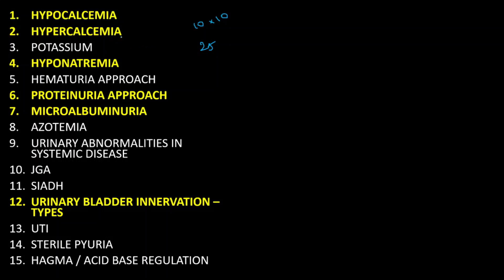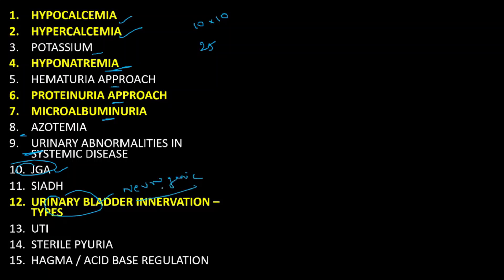With respect to electrolytes, hypocalcemia and hypercalcemia are very important, as well as potassium disorders, hyponatremia, and the concept of SIADH. Hematuria approach, proteinuria approach, microalbuminuria, azotemia, urinary abnormalities, and systemic injuries are also key topics. In the first paper, you can expect anatomy and physiology related things — juxtaglomerular apparatus (JGA) is very important, urinary bladder innervation is very important, and types of neurogenic bladder are very important.